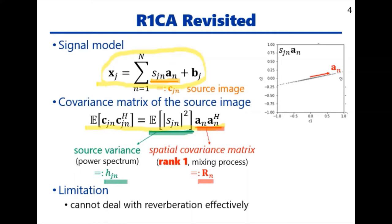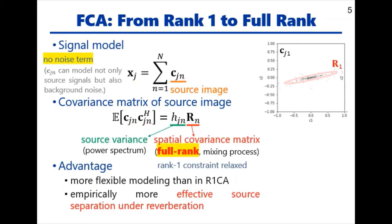A limitation of this method is that it cannot deal with reverberation effectively. In contrast, the signal model in FCA is given as shown here, where C denotes a source image. Here, there is no noise term, and this is because C can model not only source signals, but also background noise.